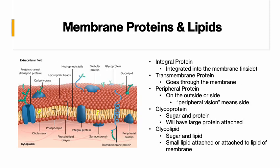Within this membrane there are proteins and lipids. Integral proteins are integrated into the membrane — they're stuck inside of it. Looking at the picture, the ones that are actually embedded all the way through are integral. Transmembrane proteins go through the membrane in one side and out the other side. Peripheral proteins are on the outside of the membrane, stuck to one side — you can remember peripheral by thinking about peripheral vision, meaning to the side.